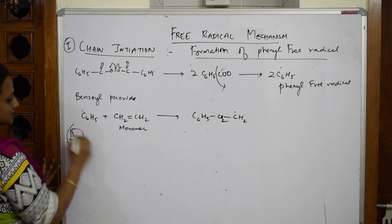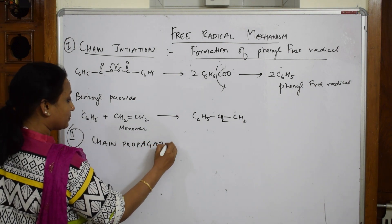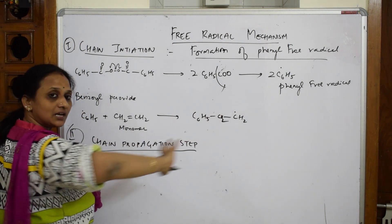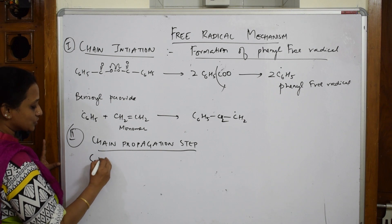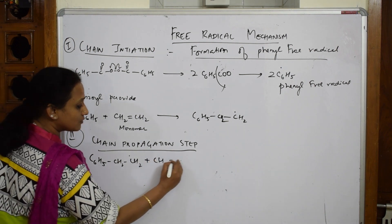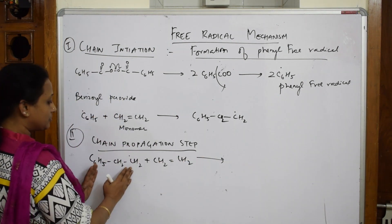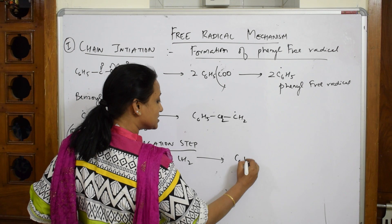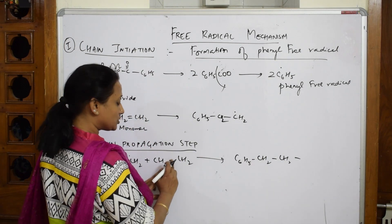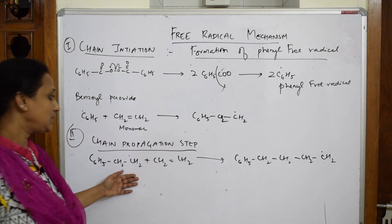In the chain propagation step, observe carefully - this free radical further adds to one more monomeric unit. C6H5-CH2-CH2• adds to another alkene; the double bond breaks and joins, giving C6H5-CH2-CH2-CH2-CH2•. From 3 carbons it has become 5 - the chain keeps growing.